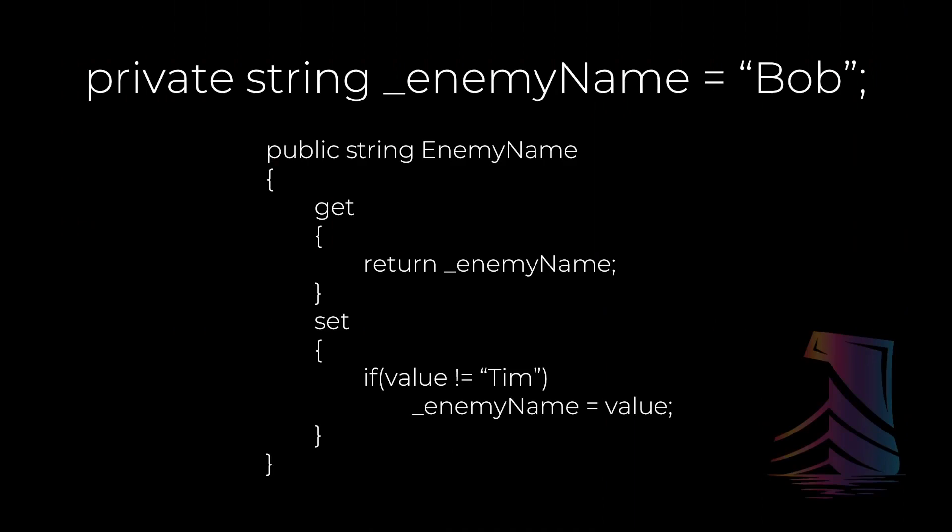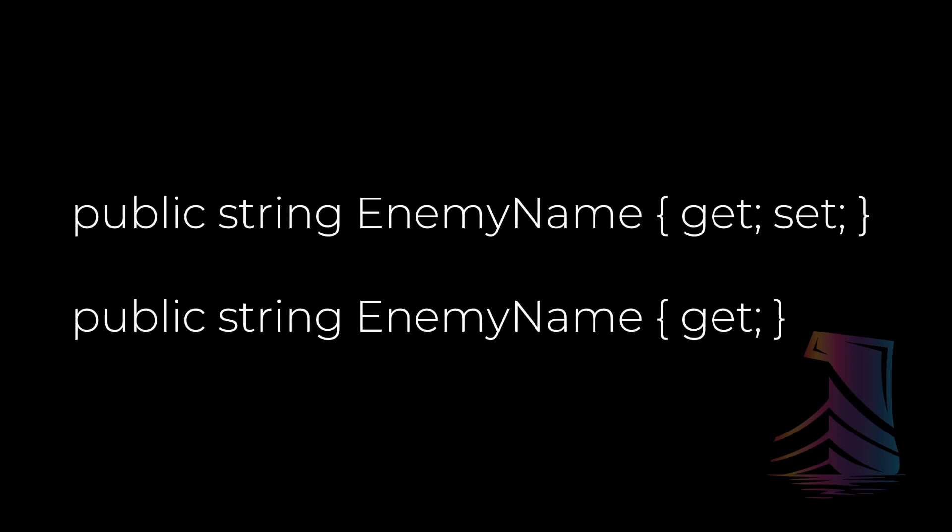In a video game, properties are at their best when you're using auto properties. So this is what we ended up with, but why bother with the variable at all? If you type your properties like the examples shown here, you can forgo having a variable altogether — these are what are known as auto properties. If you type a property with get and set followed by semicolons within curly braces, or simply get followed by a semicolon in curly braces, C# will make a variable behind the scenes for you. But you'll simply use enemyName in Pascal case to interact with the data.